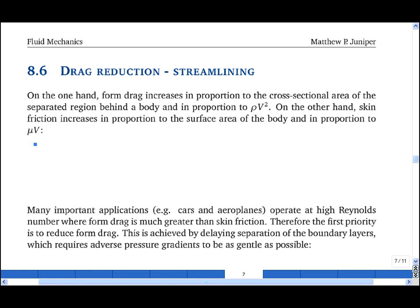Form drag scales with the wake area times the dynamic pressure. Using a scaling argument for a sphere, the wake area scales with d squared. The dynamic pressure is a half rho v squared, and so the drag coefficient for form drag scales with d squared times a half rho v squared, but it's divided by a half rho v squared times a characteristic area, which is d squared, so we see that that scales with 1.